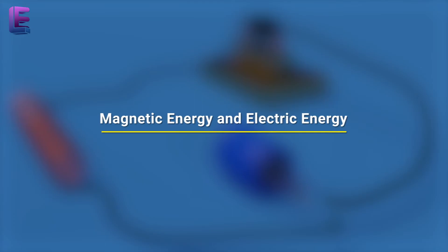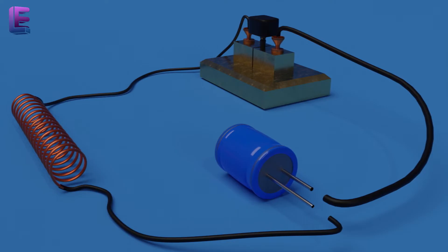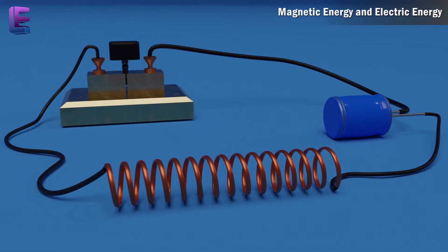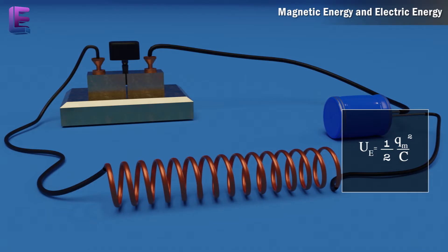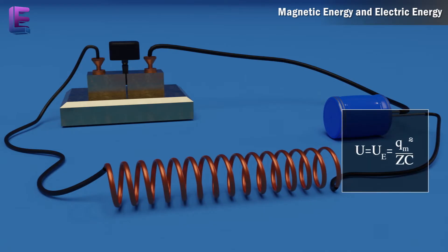Magnetic energy and electric energy. When a capacitor with initial charge qm is connected to an ideal inductor, the electric energy stored in the capacitor ue equals 1 by 2 q square m by c. Since there is no current in the circuit, energy in the inductor is 0. Thus, the total energy of LC circuit is u equals ue equals q square m by 2c.